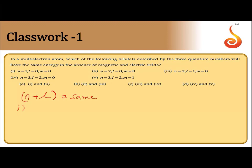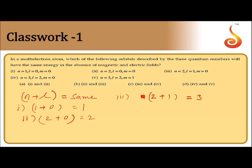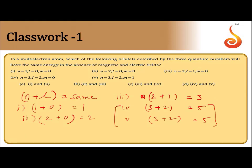Taking the options one by one: the first option has n=1, l=0, so n+l=1. The second has n=2, l=0, giving n+l=2. The third has n=2, l=1, so n+l=3. The fourth has n=3, l=2, giving n+l=5. The fifth also has n=3, l=2, giving n+l=5. So the fourth and fifth cases have the same n+l value, which means those two orbitals will have the same energy.